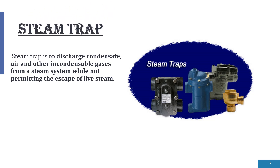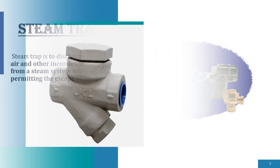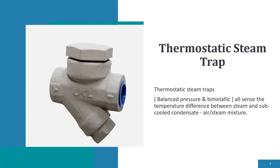Let's move on to the next topic: steam traps. A steam trap is designed to discharge condensate, air, and other non-condensable gases from a steam system while not permitting the escape of live steam. One type available is the thermostatic steam trap, which senses the temperature difference between steam and sub-cooled condensate, air, or steam mixture.